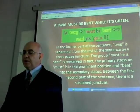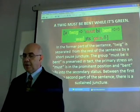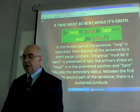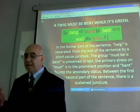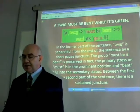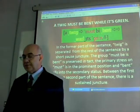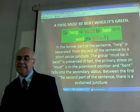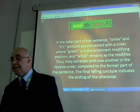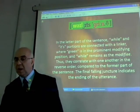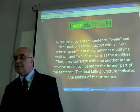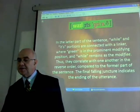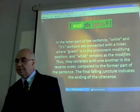In the former part of the sentence, 'a twig must be bent,' a twig is separated from the rest by a short pause juncture. The group 'must be bent' is preserved intact; the primary stress on 'must' is in the prominent position, and 'bent' falls into secondary status. Between the first and second parts of the sentence there is a sustained juncture. In the latter part, 'while it is green,' those portions are connected with a linker — while it's, while it's — where 'green' is in the prominent modifying position, and 'while' remains as the modifiyee. Thus they correlate with one another in the reversal compared to the former part of the sentence.